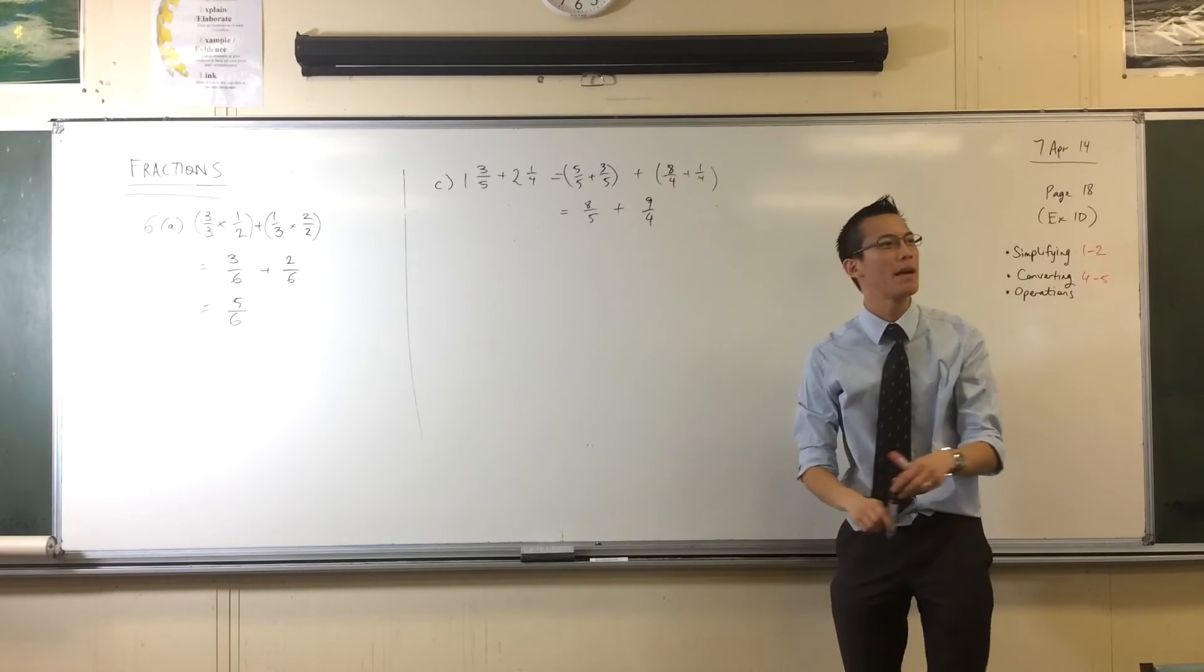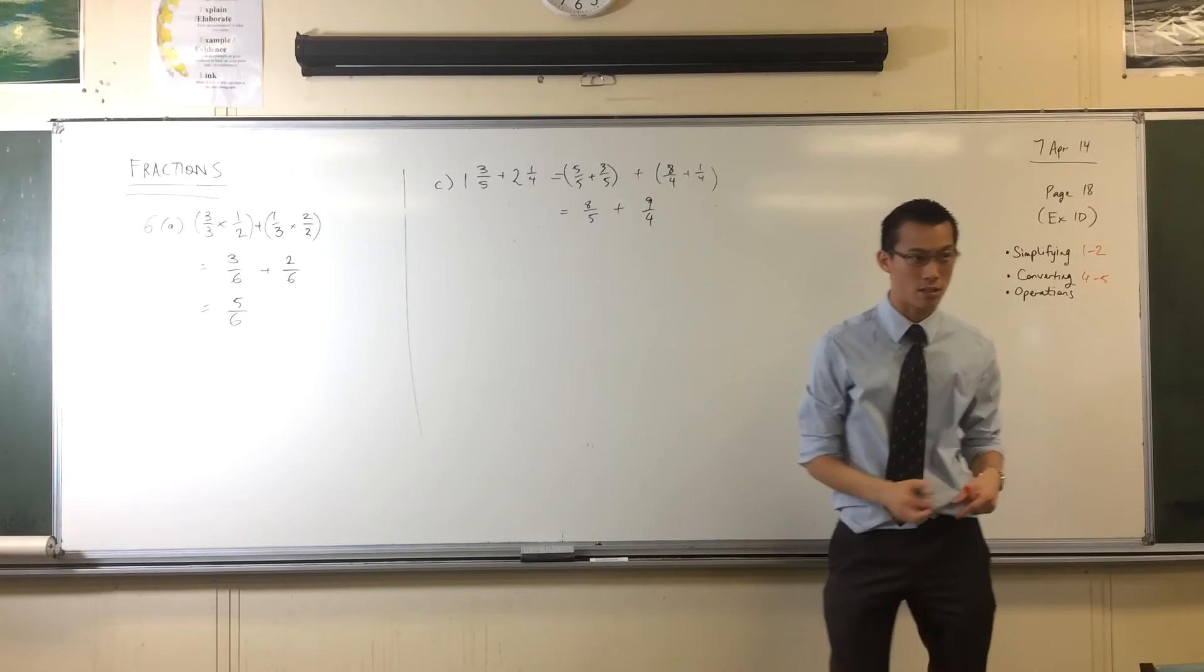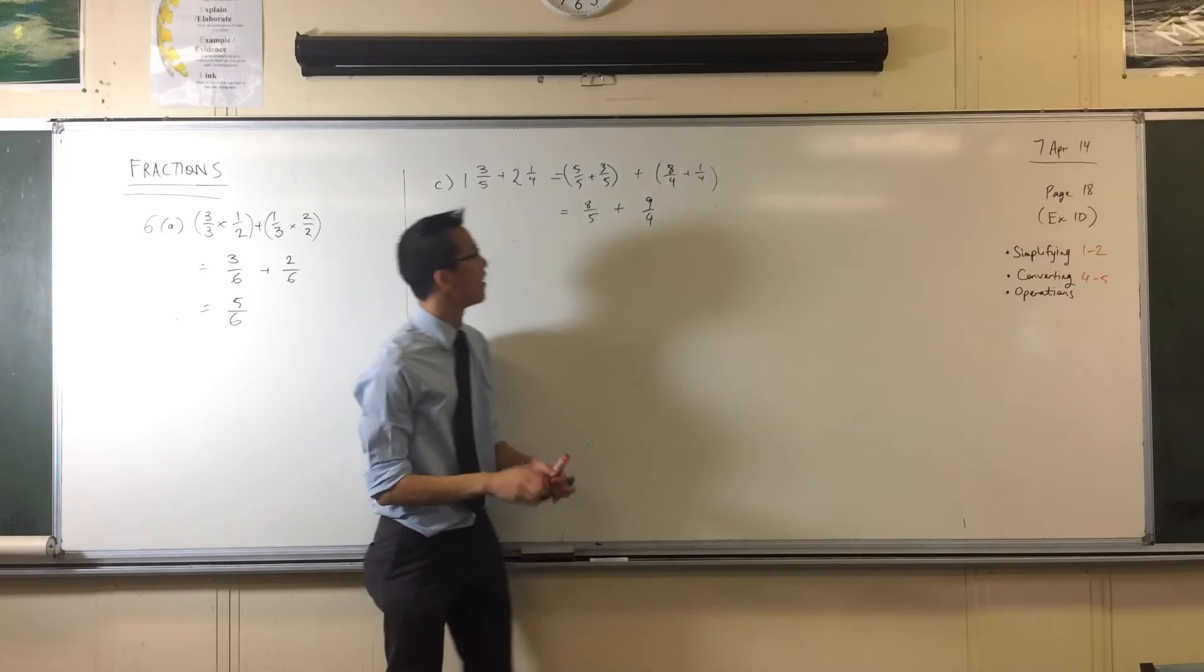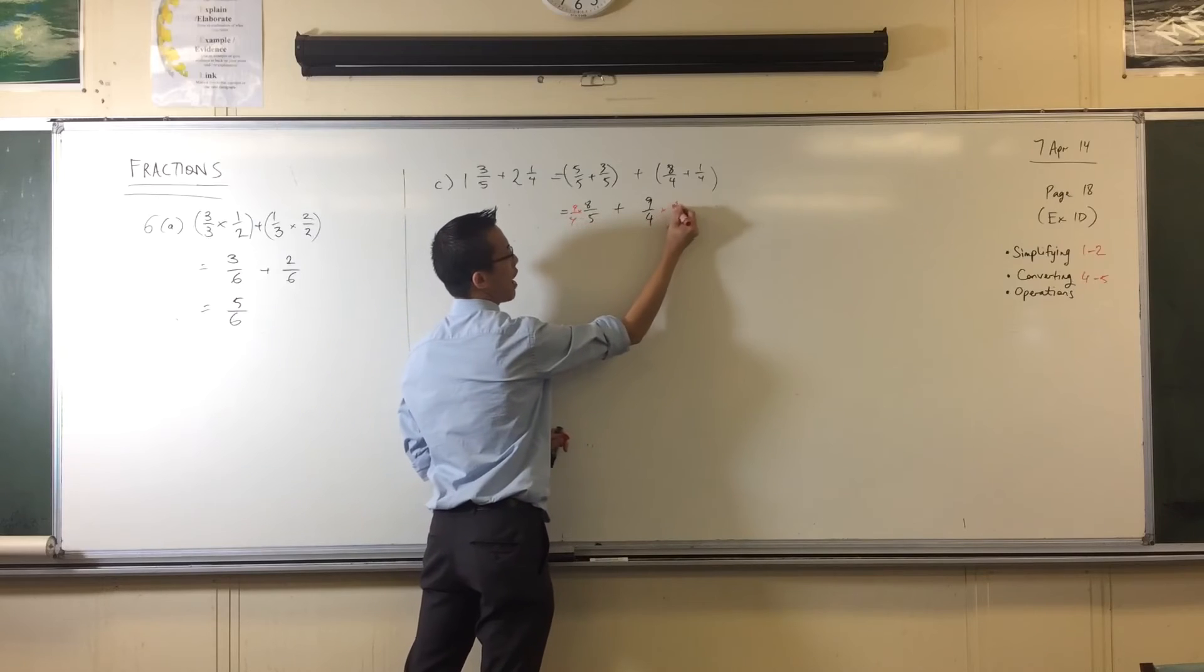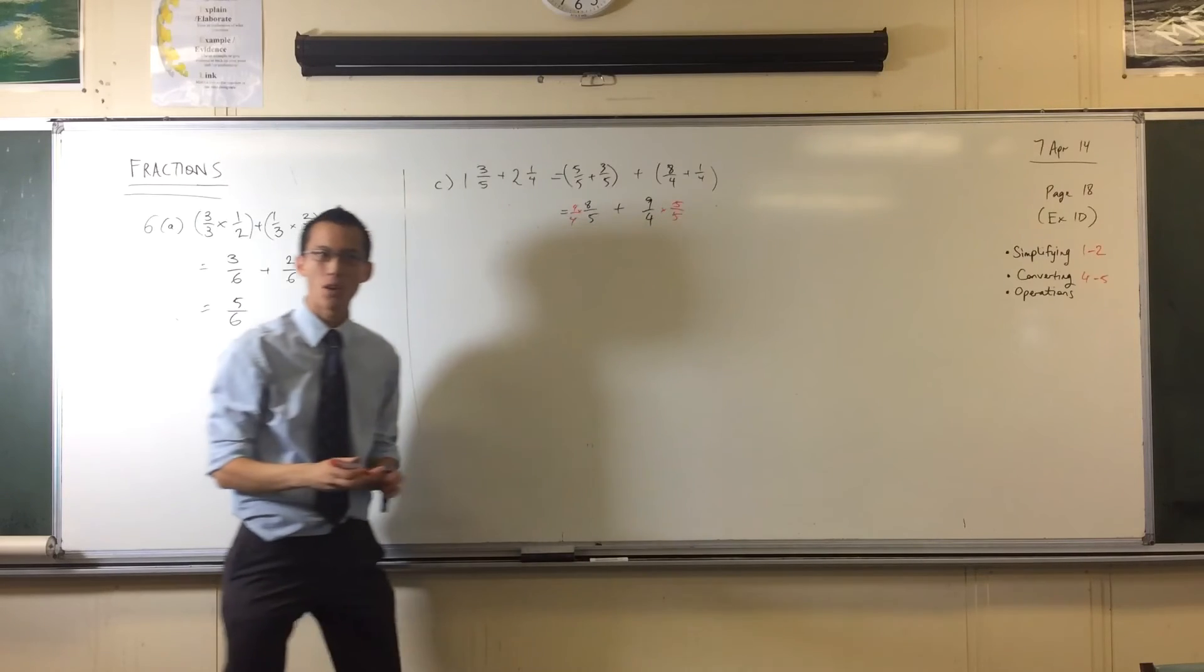Now, what shall I multiply by to get a common denominator? Because I don't have one. Four times five. Four over four and then five over five. So now I'll get my numbers.